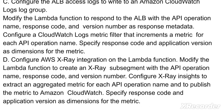Option D: Configure AWS X-Ray integration on the Lambda function. Modify the Lambda function to create an X-Ray sub-segment with the API operation name, response code, and version number. Configure X-Ray Insights to extract an aggregated metric for each API operation name and to publish the metric to Amazon CloudWatch. Specify response code and application version as dimensions for the metric.